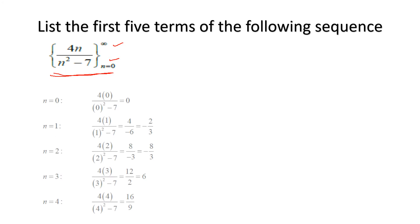We see that if we put n equal to 0, because this sequence starts from 0 onward, if we put n equal to 0 here we obtain the first value. For n equal to 1 we obtain minus 2 by 3 after simplifying, and similarly when we put n equal to 2 we obtain the term minus 8 by 3.